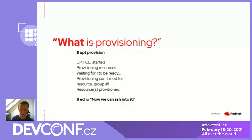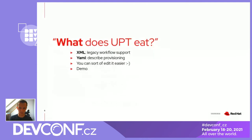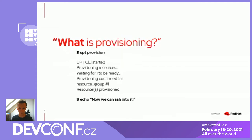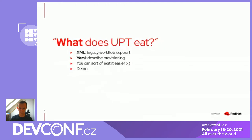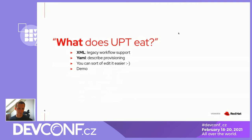What does Upt take as input? There could be a couple more command line options, but it's supposed to be simple to get that repeatable workflow. How do you tell it what to provision and what to do? There's an XML file mostly for Beaker for legacy workflow — it supports that fully — and there's a YAML file for either Beaker or other provisioners. Both can be edited by hand; it's not 100% user-friendly, but it's easier with the YAML and it can be done.